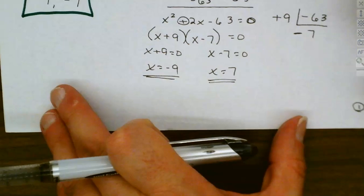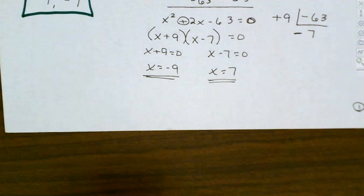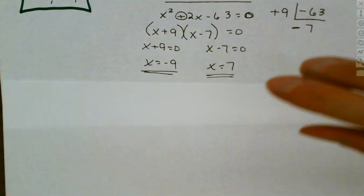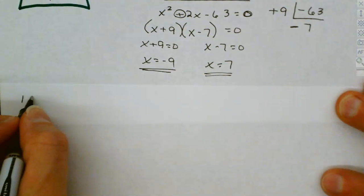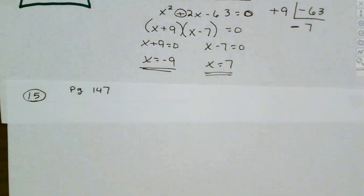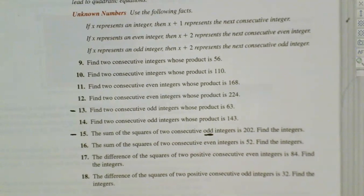Let's do another one — this one is going to work with the sum of the squares. We're going to look at question 15 on page 147. We're going to be squaring these numbers, and on question 15, these are odd numbers again. The sum of the squares of two consecutive odd integers is 202.